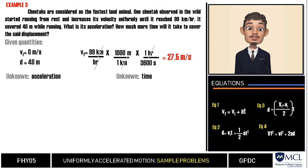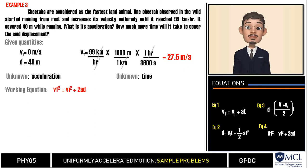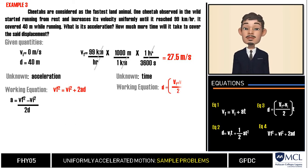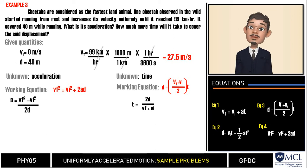Now that all units of our given are in standard units, we will choose our working equations. We are asked to get the acceleration, where initial velocity, final velocity, and displacement are given. With these units, we can use the formula Vf squared equals Vi squared plus 2ad, which we may rearrange as Vf squared minus Vi squared all over 2d. Then to get time, we can use d equals (Vi plus Vf) over 2 multiplied by time. We rearrange this because we are looking for time, as t equals 2d over (Vi plus Vf).